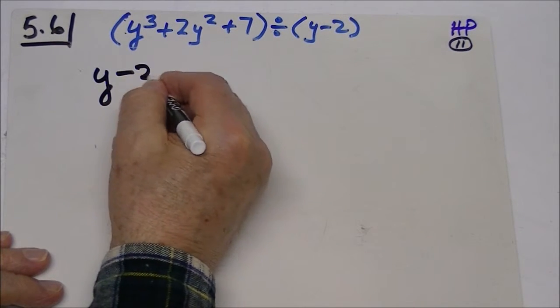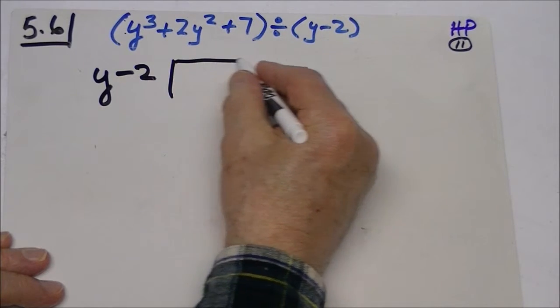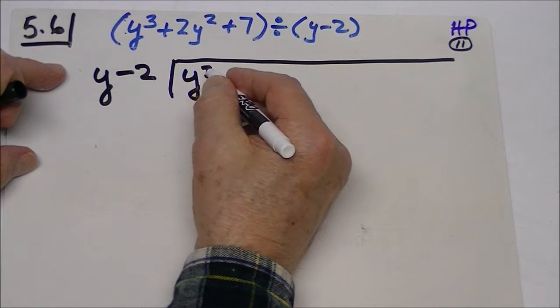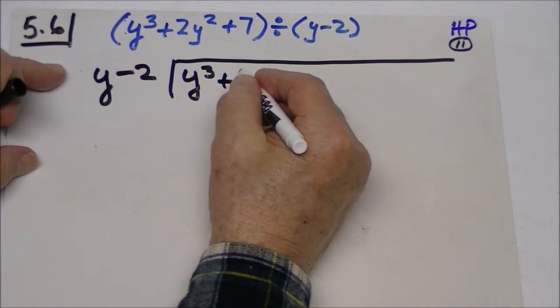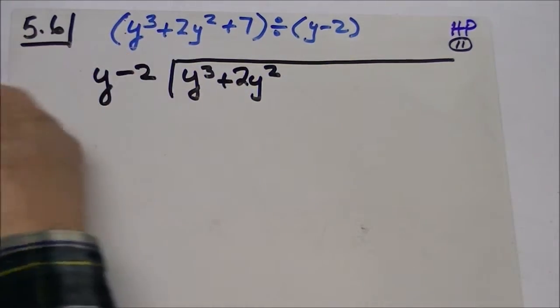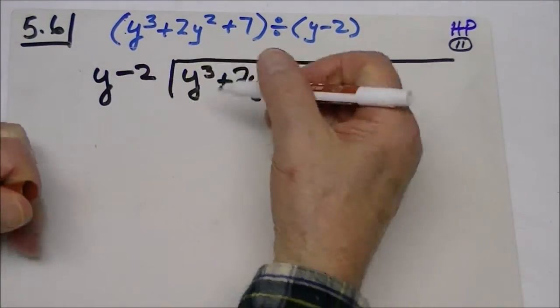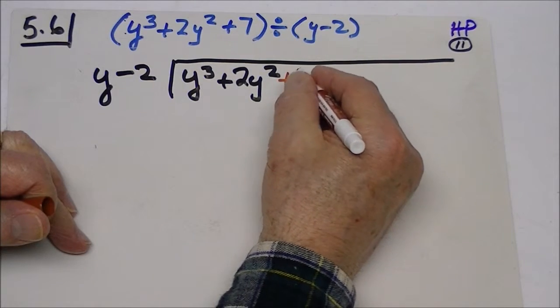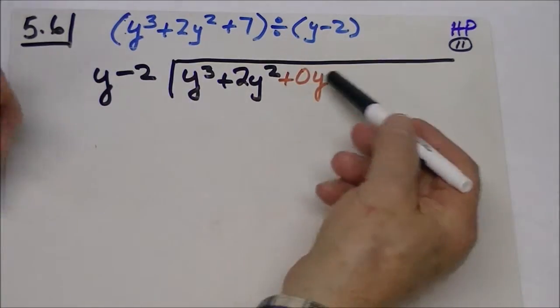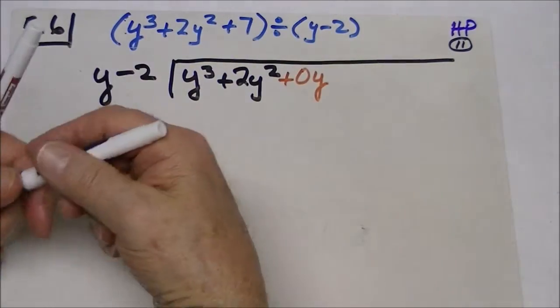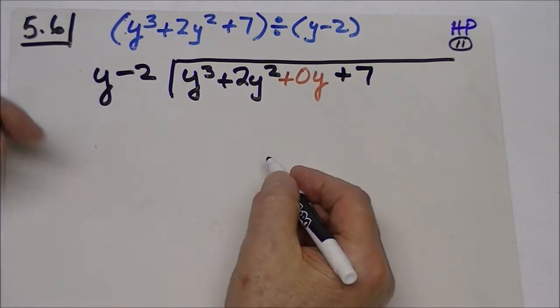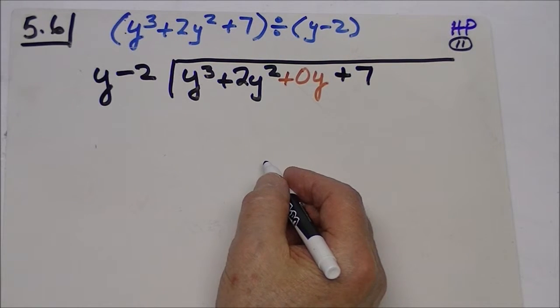So let's set it up: y minus 2 there, and here we're going to get y to the third plus 2y to the second. Now there is no y to the first, so we're going to put in a space holder. It has no value, it's zero, but it just occupies that space, and then plus 7.